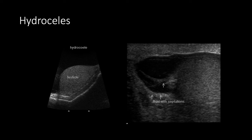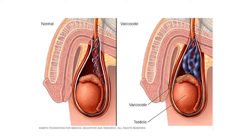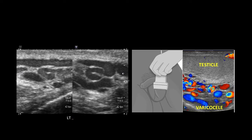A varicocele occurs when the pampiniform venous plexus becomes engorged, which can impair fertility and potentially compress testicular blood flow. Varicoceles are most common on the left side because the left gonadal vein drains straight up to the renal vein rather than at an angle. On ultrasound, the dilated veins appear 'wormy,' and color flow demonstrates venous flow within them — distinct from the whirlpool sign. They can become large enough to compress the testicle and cause infarction or infertility.